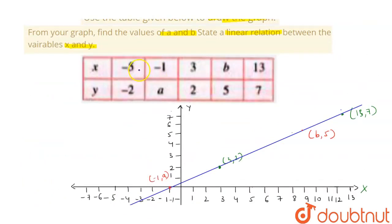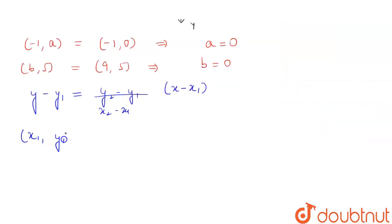Let's say we are taking 3, 2 and 13, 7. So our x₁, y₁ will be equal to 3, 2 and we will have our x₂, y₂ to be equal to 13, 7.